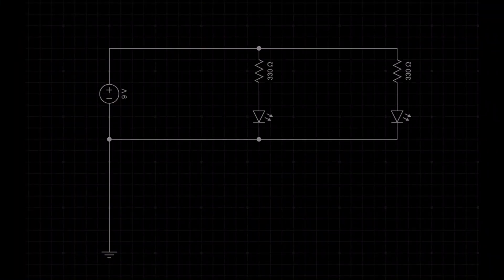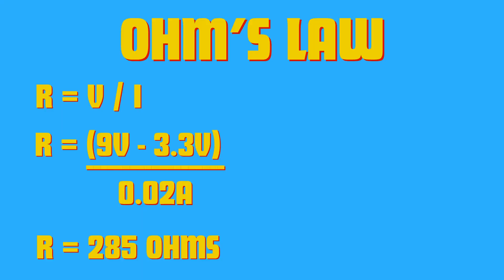In a parallel circuit, there are multiple pathways for the current to flow. In this circuit, the current flows through the first blue LED, and the rest through the other blue LED. Since there are multiple pathways, a resistor is required for each LED. Each pathway has its own calculation — 285 ohms is the minimum resistance required to avoid blowing the LED.